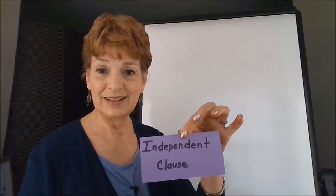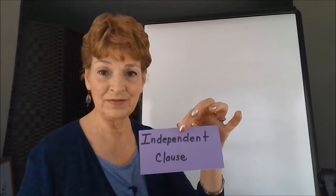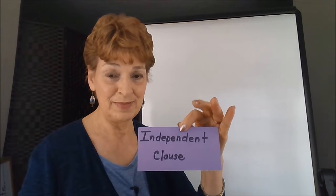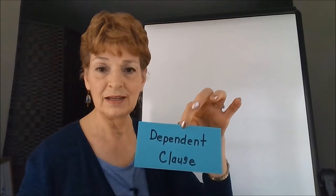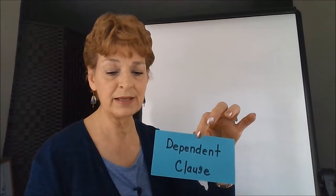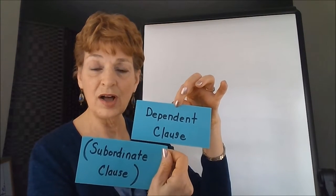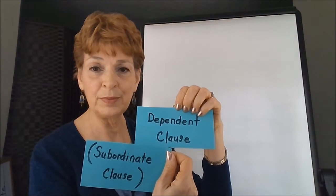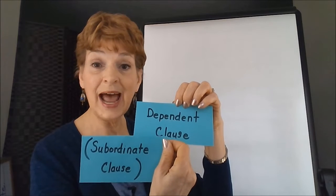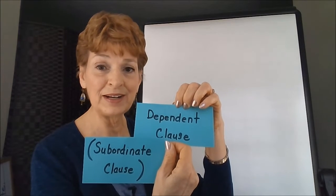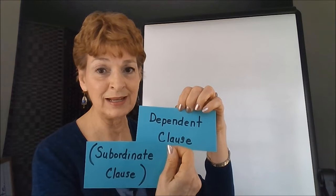These three types of sentence structures use the independent clause, which has a subject and verb and makes sense by itself, and also uses the dependent clause, which is sometimes known as a subordinate clause. These also contain a subject and a verb, but they need to be attached to an independent clause in order to make a complete sentence.